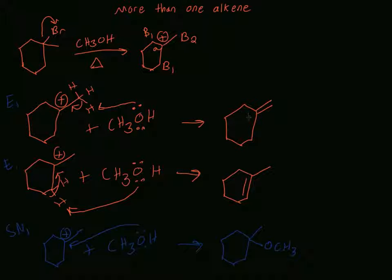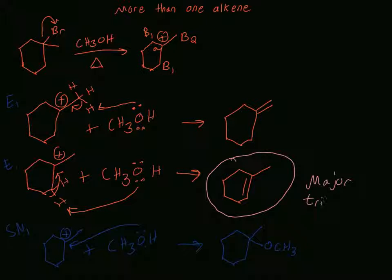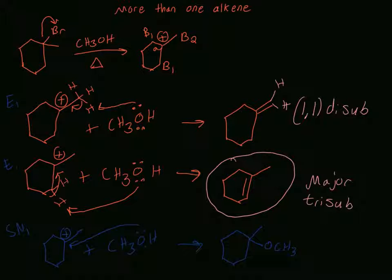Which E1 product is the major product? It's the trisubstituted one, because it has three alkyl groups branching off the double bond. Trisubstituted is more stable than 1,1-disubstituted, which only has two alkyl groups on one carbon and hydrogens on the other. This is our major product by Zaitsev's rule. That does it for this video on elimination reactions — I hope it helped!